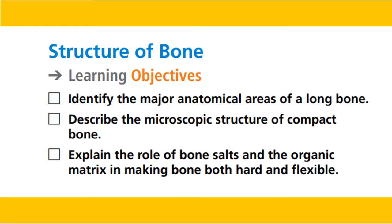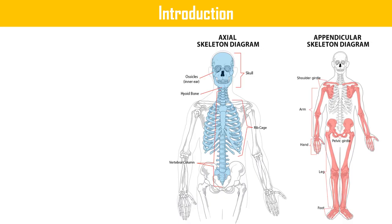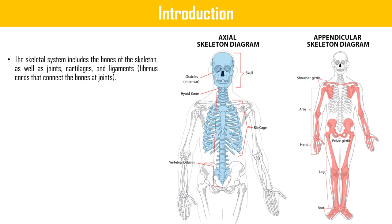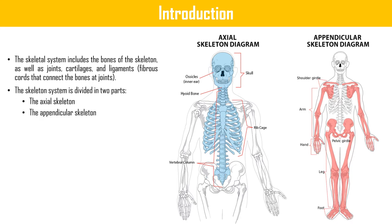Here you can see the diagram of the axial skeleton and the appendicular skeleton. The skeletal system includes bones of the skeleton as well as joints, cartilages, and ligaments — fibrous cords that connect the bones at joints.